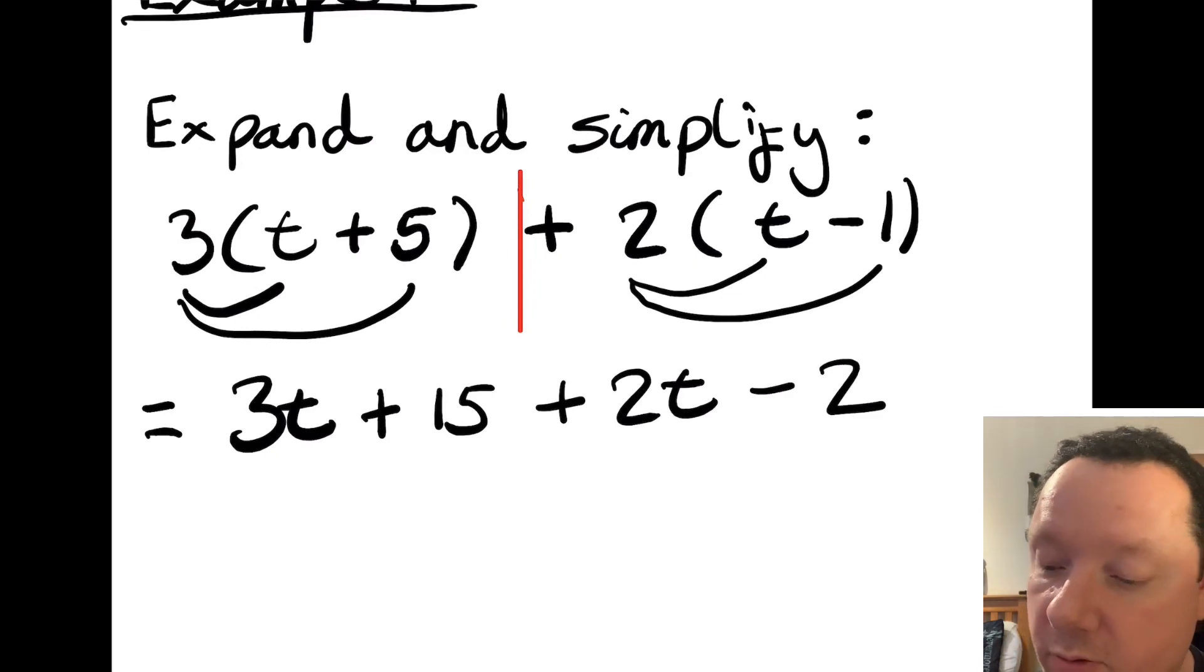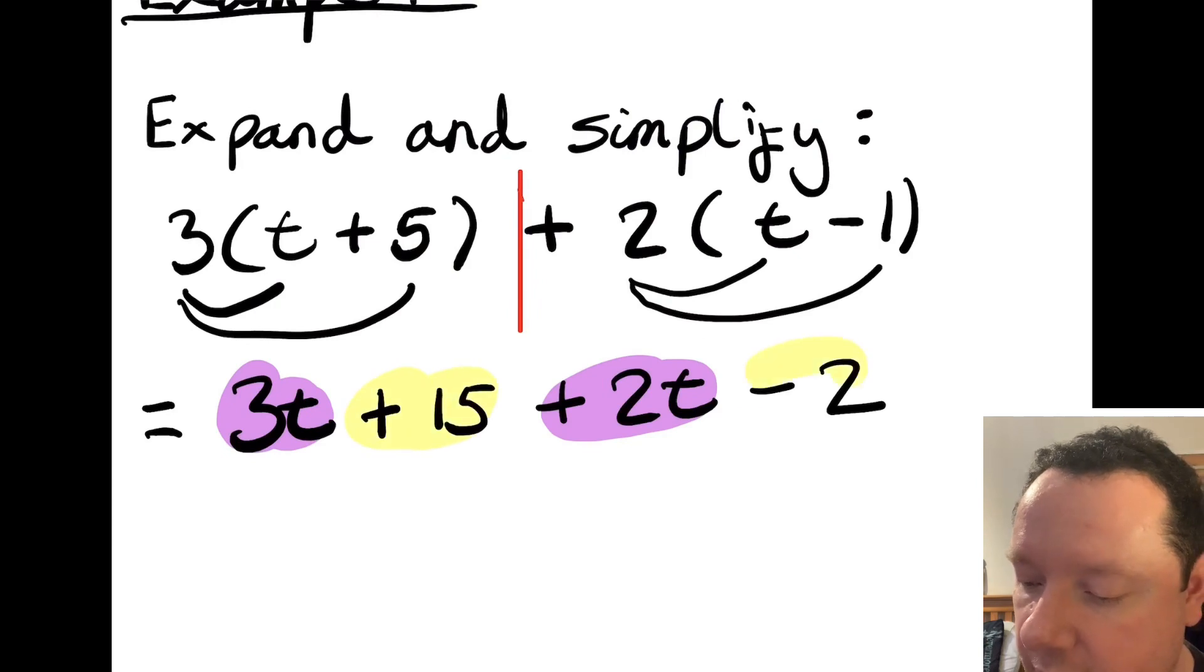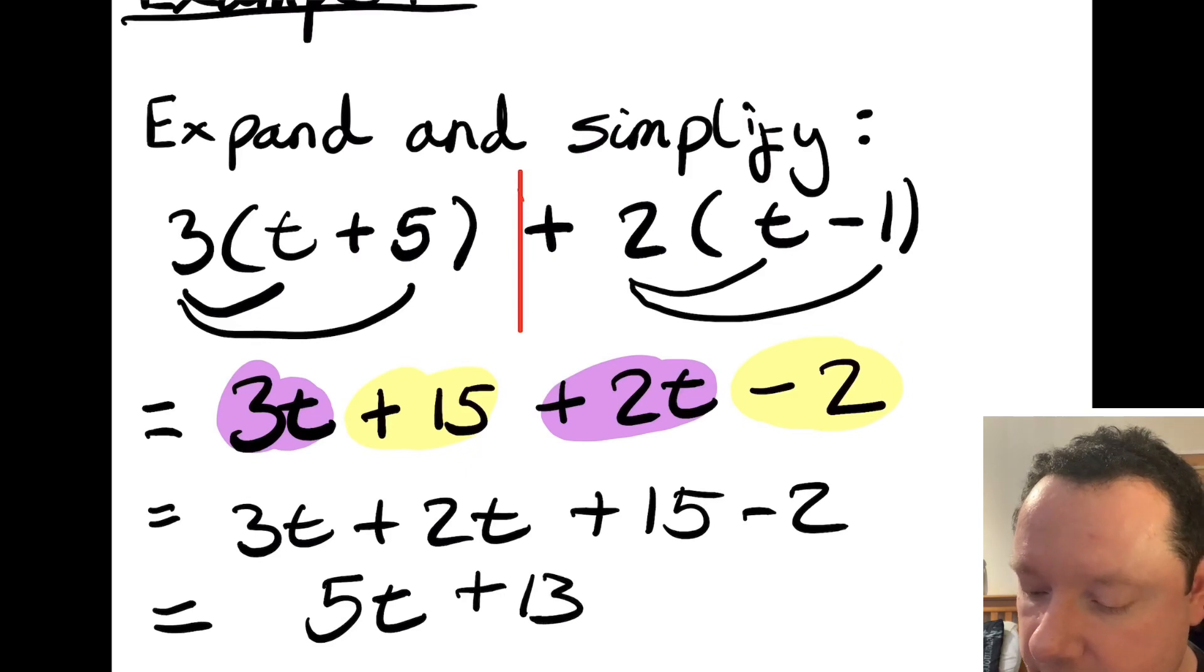And then just to remind us how do we then simplify, well we get a highlighter. The first term is 3t, the next term is plus 2t, they're the same. And then my other highlighter, say yellow, I've got 15, I've got minus 2. So I can rewrite this whole thing as 3t plus 2t plus 15, take away 2. So the final answer, 3 plus 2 is 5t. 15 minus 2 is 13, so plus 13. And that's just finished, 5t add 13.